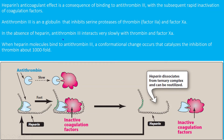By binding of heparin with antithrombin 3, it increases antithrombin 3's action. In the absence of heparin, it is a very slow process for antithrombin 3 to inactivate activated factor 2 and activated factor 10. When combined with heparin, its action increases at least a thousand times — a thousand-fold — making a naturally occurring process very fast.